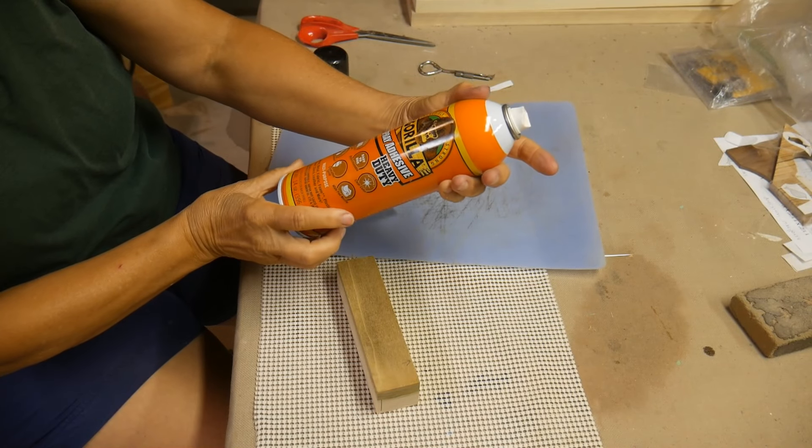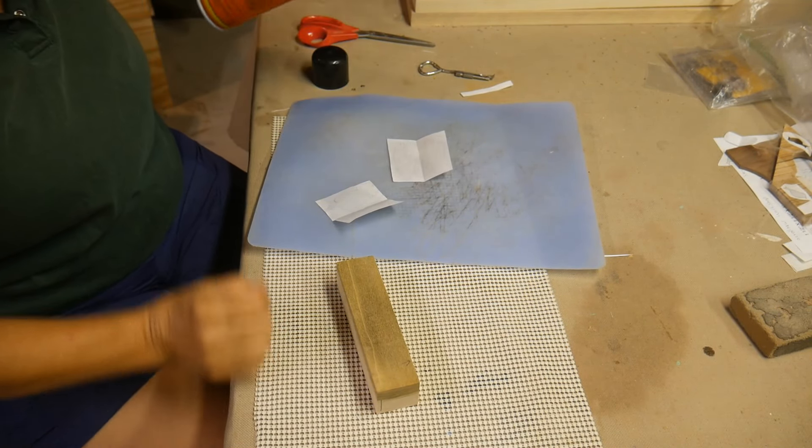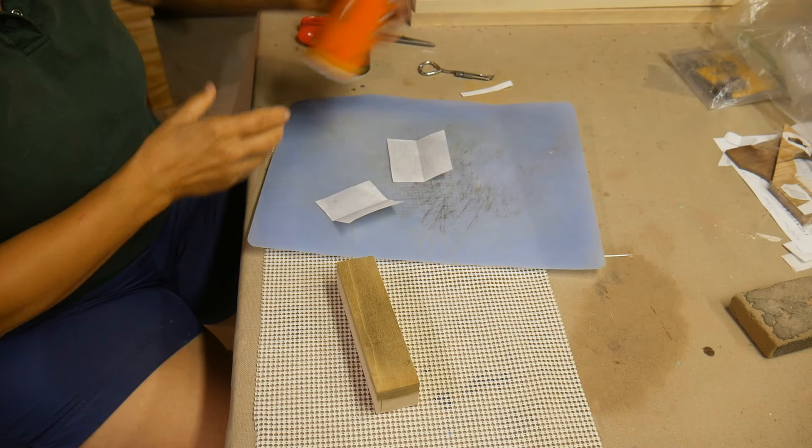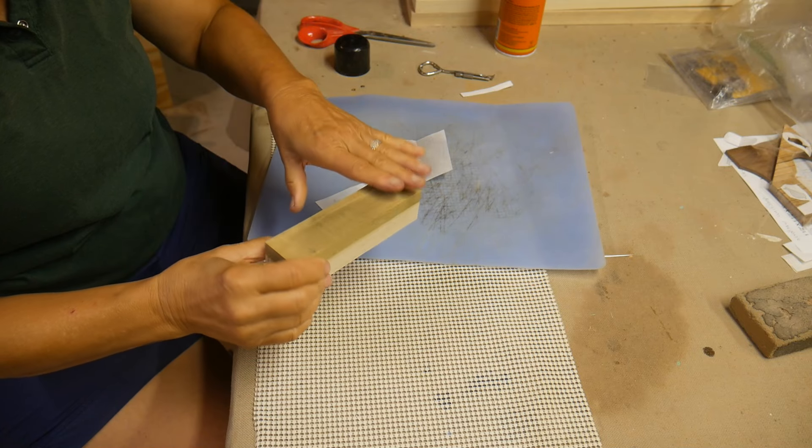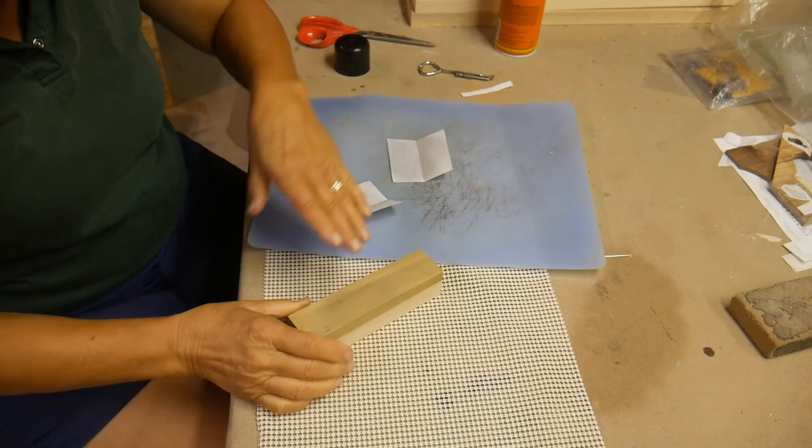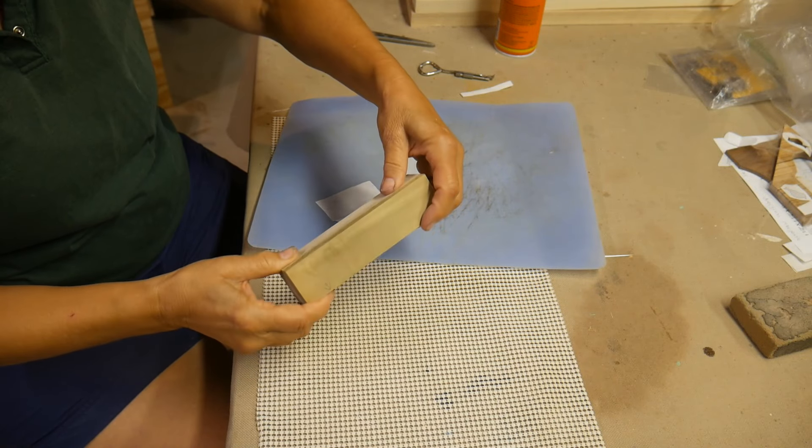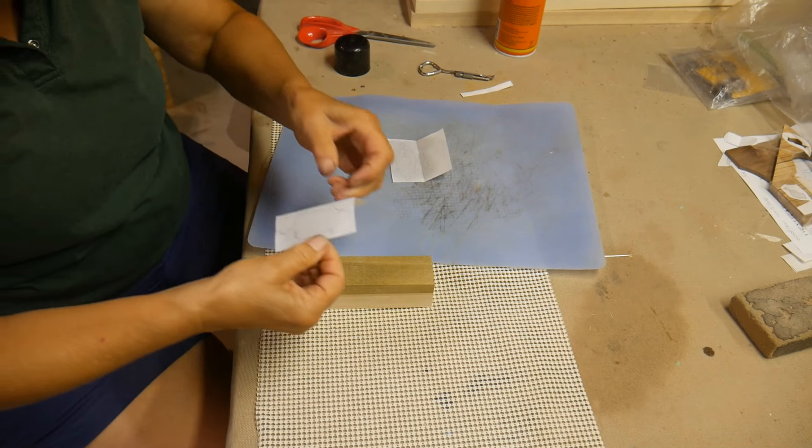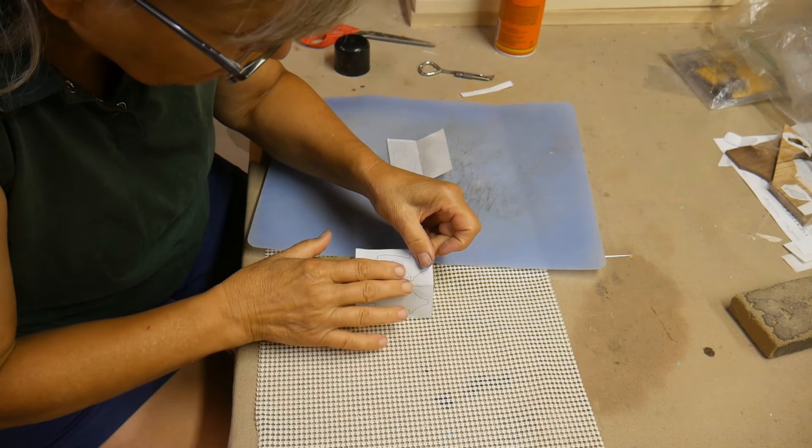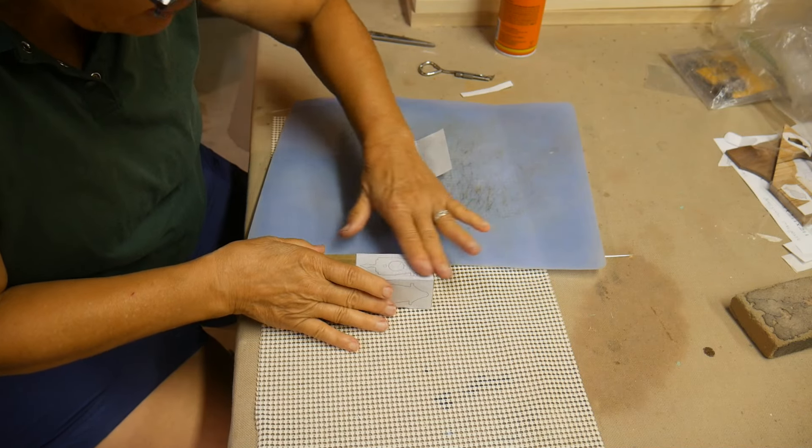I'm just using Gorilla Spray Adhesive covering the back of my pattern and a lot of times I will place the pattern on a piece of contact paper but since I don't have to remove the pattern off of the wood since it's cut on the inside I'm not worrying about that. That's just an extra step and then I'm placing it very carefully so the crease is right where it should be on the edge of the wood.